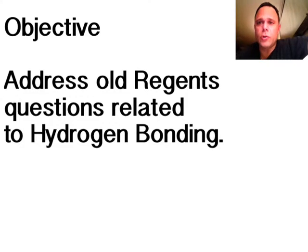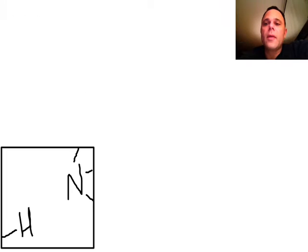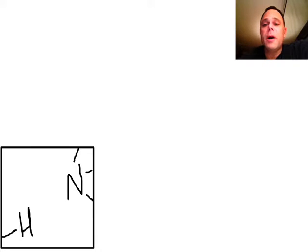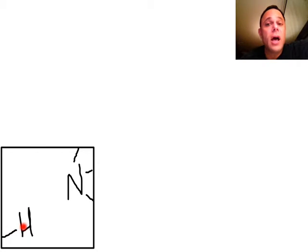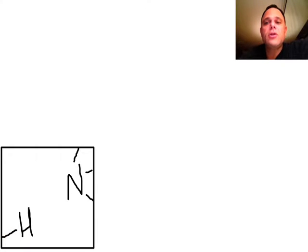In this video we're going to address Regents questions related to hydrogen bonding. But let's first remember what hydrogen bonding is. Hydrogen bonding occurs when the hydrogen of one molecule — drawn here so you can see this hydrogen is bonded to something outside the box — bonds to a nitrogen, oxygen, or fluorine of another molecule.